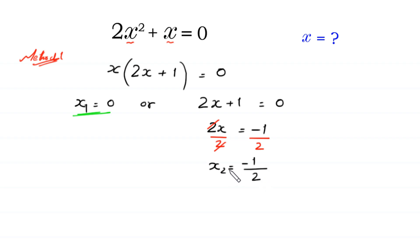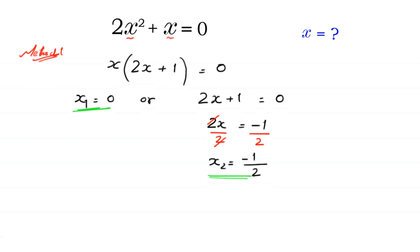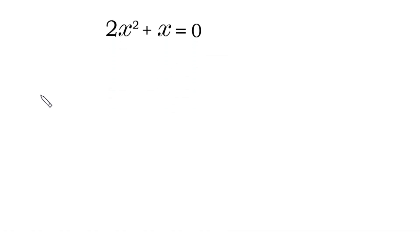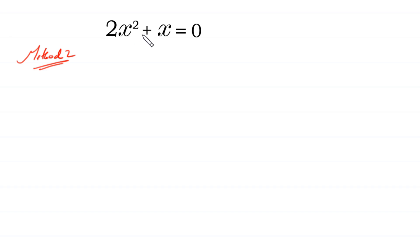This is the second value of x, the second solution of this equation. So from Method 1 we get two solutions. Now let's solve this equation by Method 2.